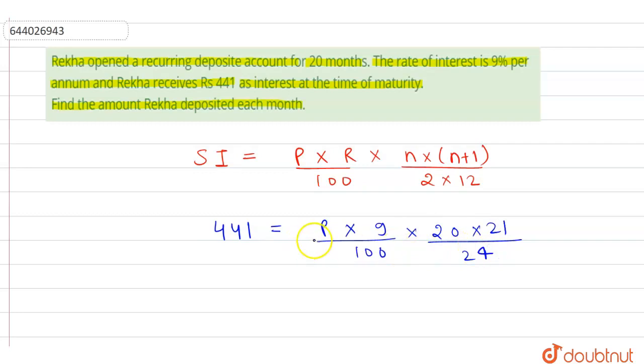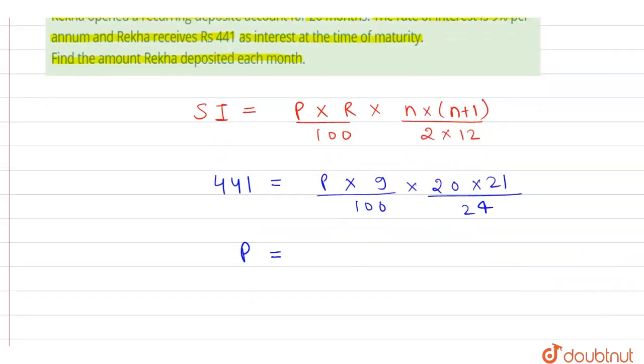So from this, P = (441 × 100 × 24)/(9 × 20 × 21) rupees.